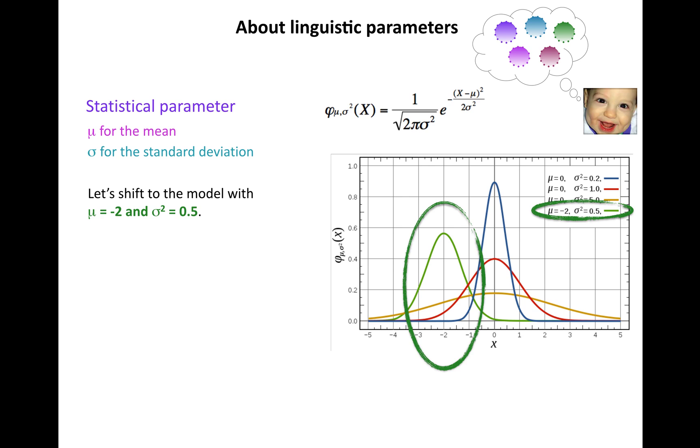Let's shift to another example of this model, the green curve, which seems to have a lot of its probability mass concentrated on the two minutes early area down here.